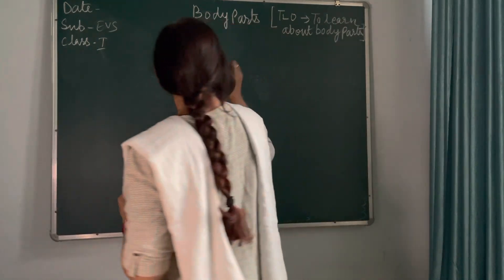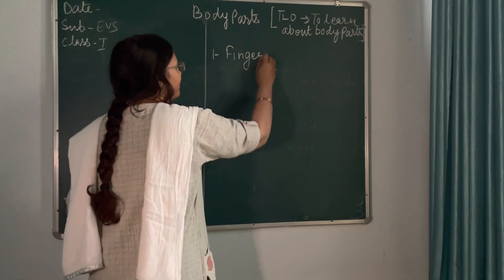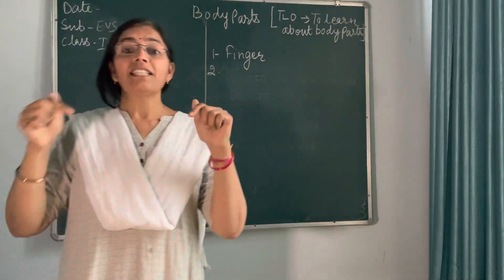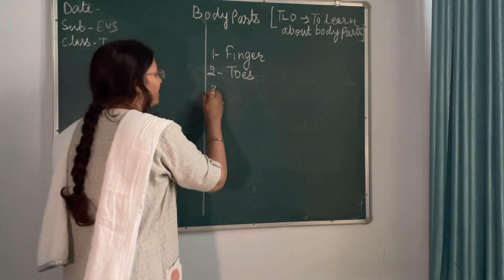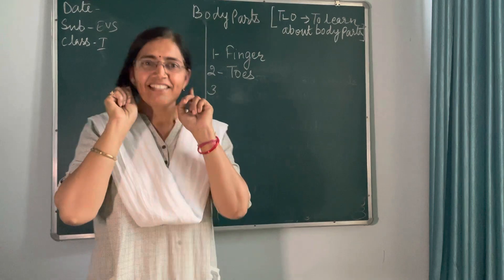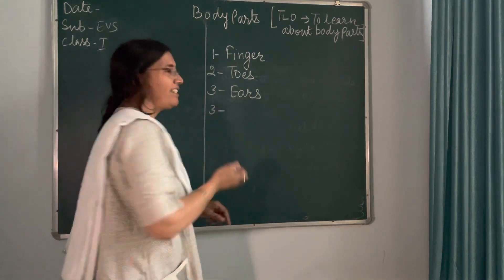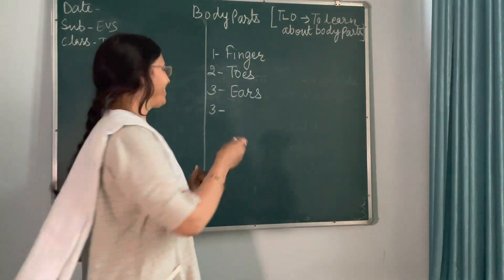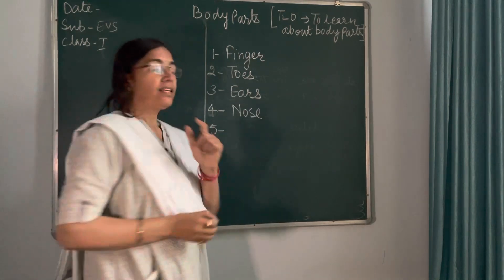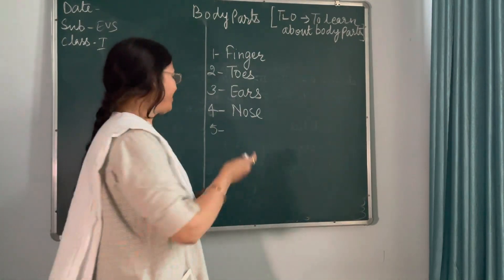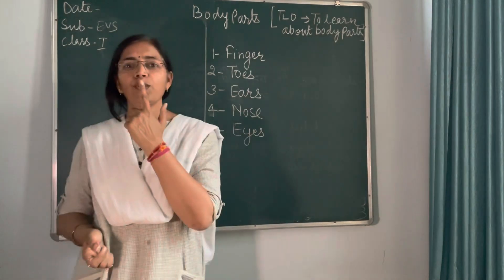Then write down the name of one body part: fingers. Second is ten little toes — write down the word toes. Third is two little ears — write down the word ears. Then one shiny nose. The fifth one is two little eyes, and the sixth one is two little lips.